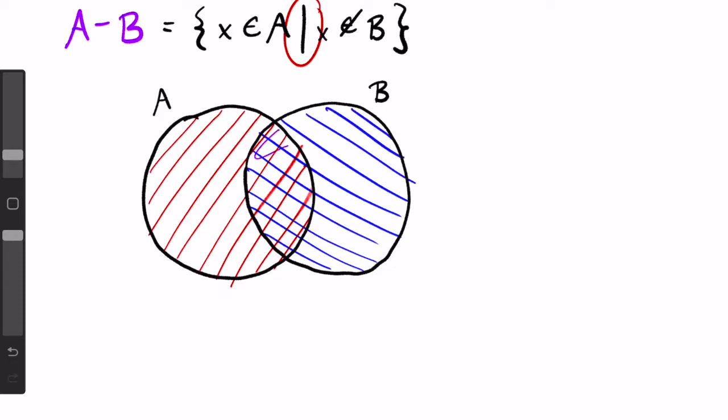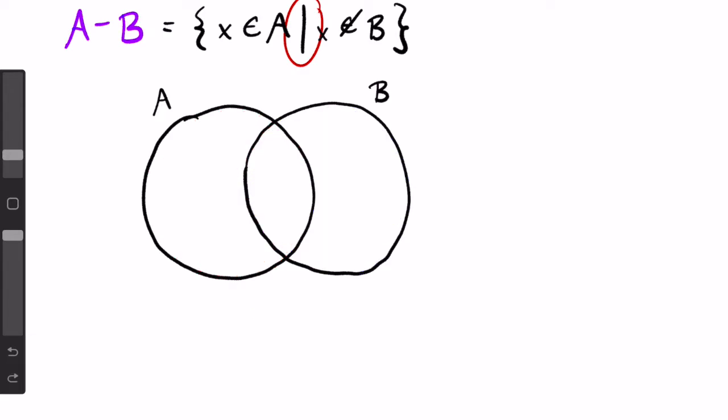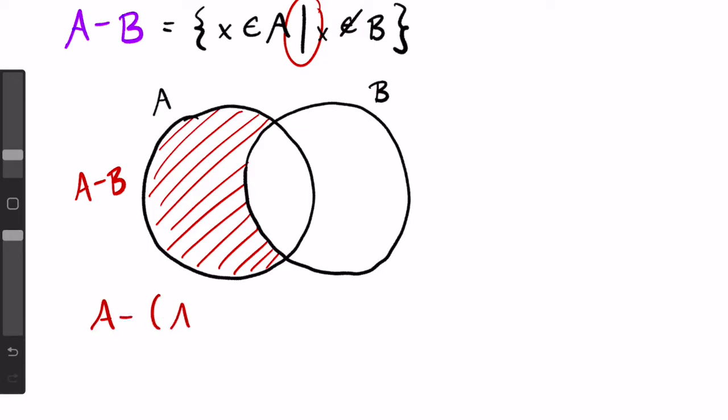So anything in this middle part then would be in both A and B, or in A intersect B. Using the Venn diagram, A minus B would be the set of everything in A but not in B. Another way to say this is A minus (A intersect B).